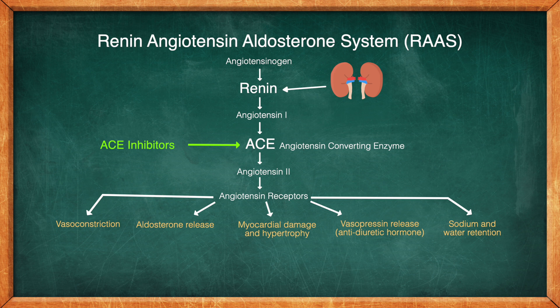ACE inhibitors prevent the conversion of angiotensin 1 to angiotensin 2, and the entire pathway gets interrupted. Angiotensin receptor blockers prevent angiotensin 2 from binding, blocking the cascade of effects. Therefore we have less vasoconstriction, less sodium and water retention, and less resulting neurohormonal activation of myocytes.